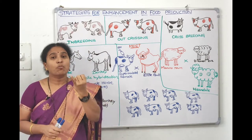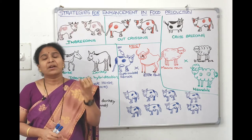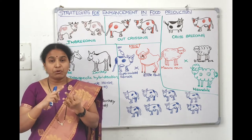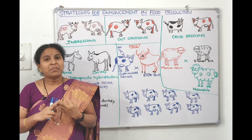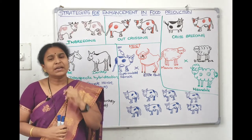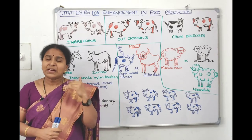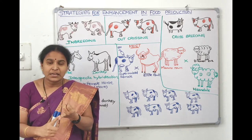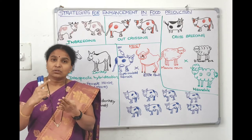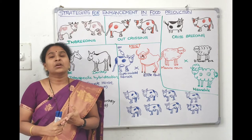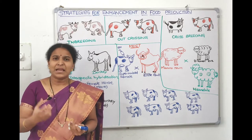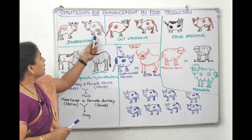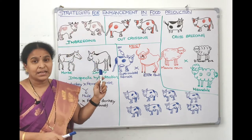The advantages of inbreeding: it increases homozygosity. Since at every level we are doing selection, we are eliminating harmful recessive genes, superior genes get expressed, and pure lines are maintained. Mating is also easy within the same breed. The only disadvantage is that repeated inbreeding leads to inbreeding depression — vitality, vigor, productivity, yield, and growth rate all decrease. Just like eating the same breakfast repeatedly creates monotony, repeated inbreeding leads to inbreeding depression.